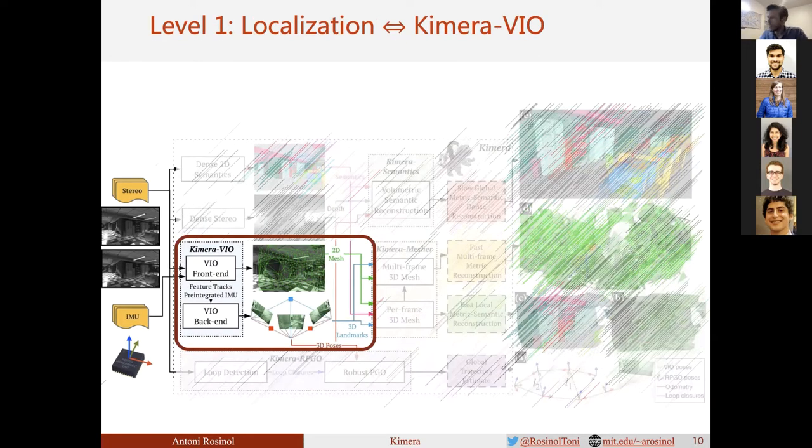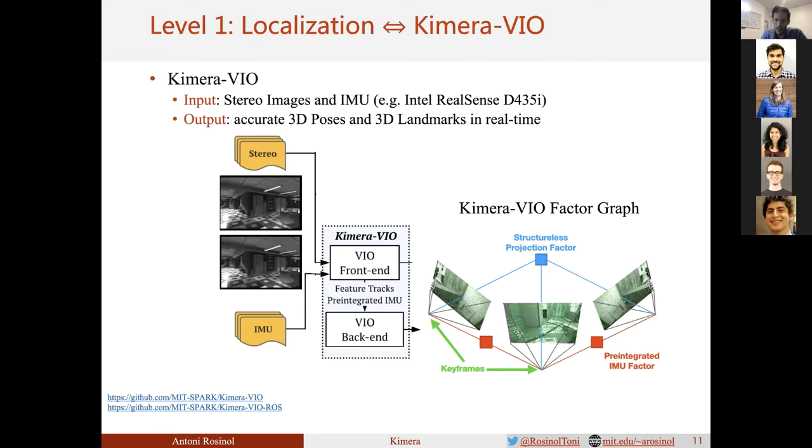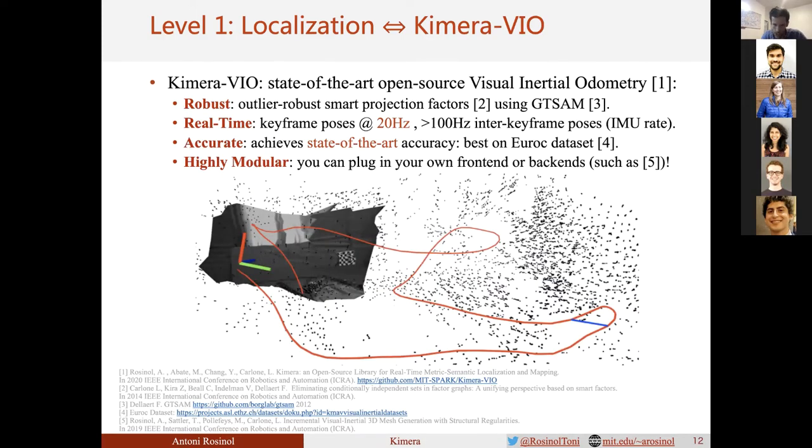Let's now focus on Kimera-VIO. Kimera-VIO tracks 2D keypoints in the images and solves a sliding window optimization problem over keyframes that minimizes reprojection error using structureless projection factors, and incorporates inertial measurements using pre-integration factors, resulting in the factor graph on the right. The result is accurate 3D pose estimates together with 3D landmarks. Our pipeline is robust, works in real-time, achieves the best performance on the EuRoC dataset, and is highly modular.